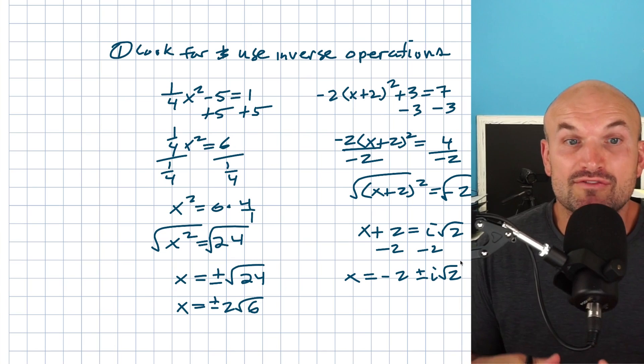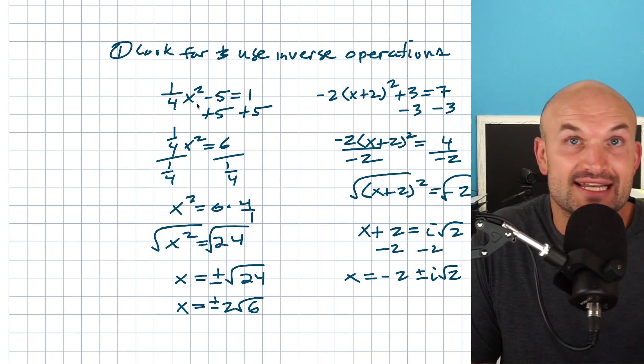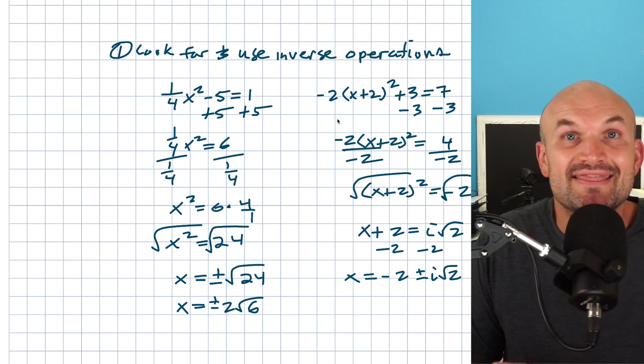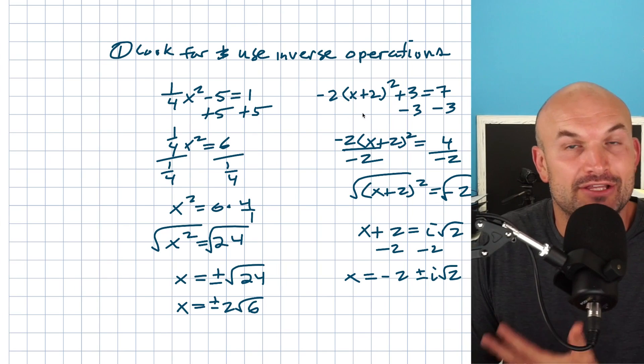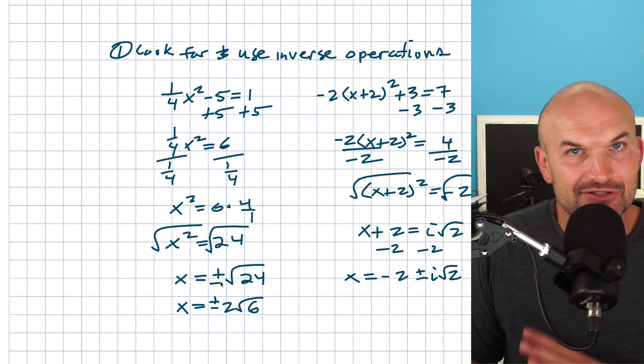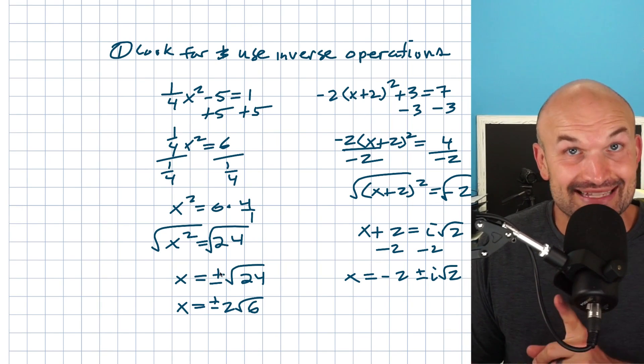Always look for when you have one single x — either just an x squared, or a quantity squared — then go ahead and apply your inverse operations. But don't forget the plus or minus. That's a big one.